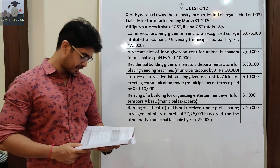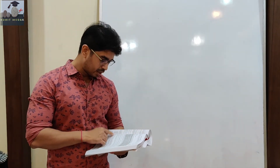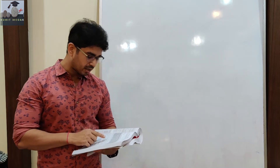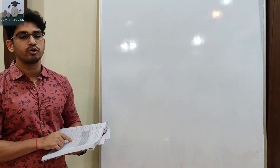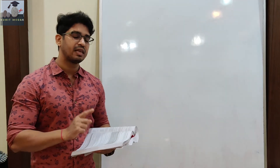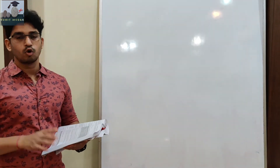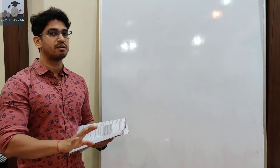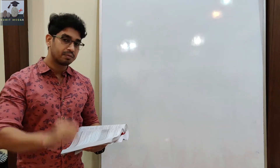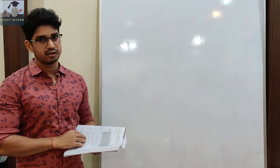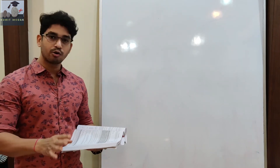अब देखते हैं solution में। सबसे पहले rent of commercial property — जो Osmania University को Mr. X ने भाड़े पे दिया था, 30,75,000। Since the property is commercial property, no matter if it is given for educational purpose or any other purpose, since it is the commercial property, उसमें GST चड़ेगा। तो यह 30,75,000 जो है, यह outer column में आएगा।